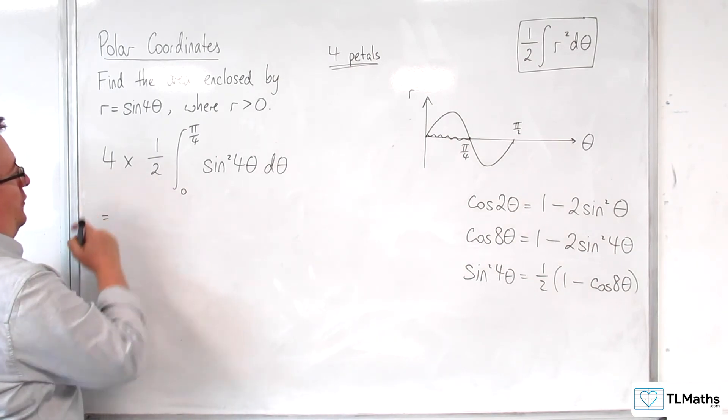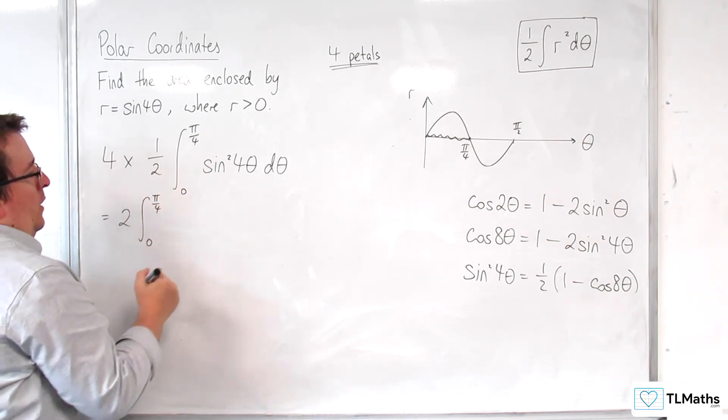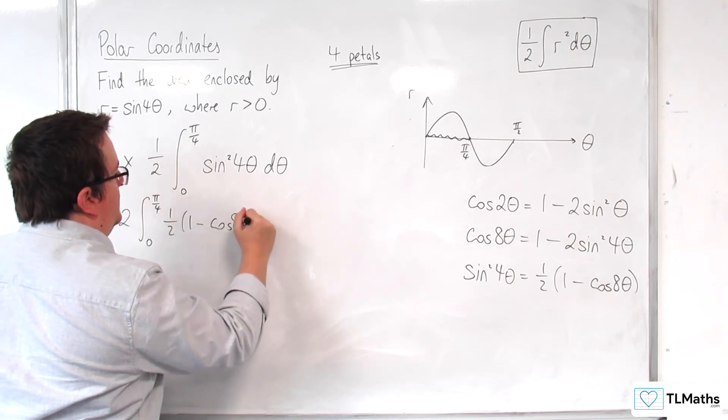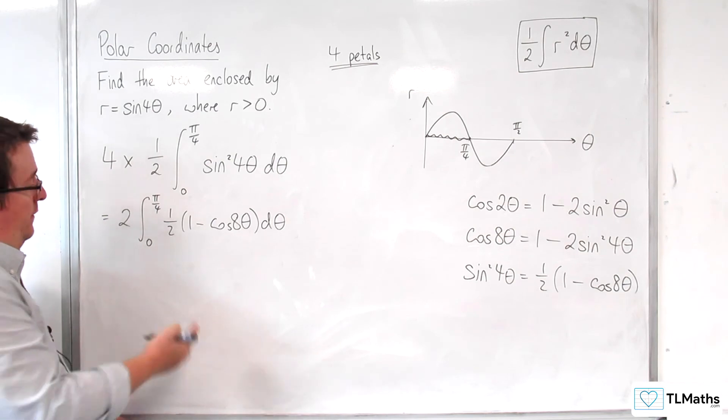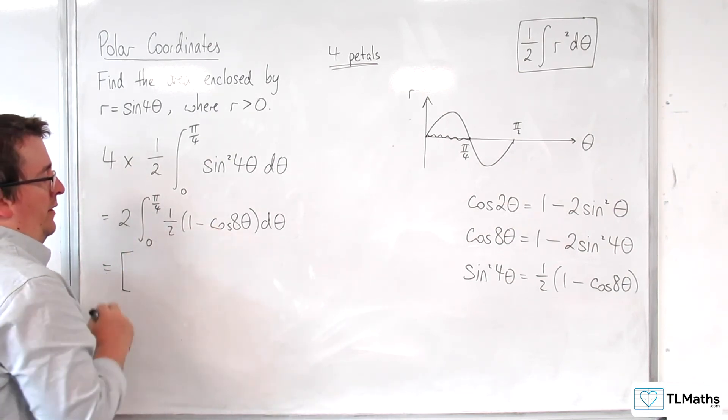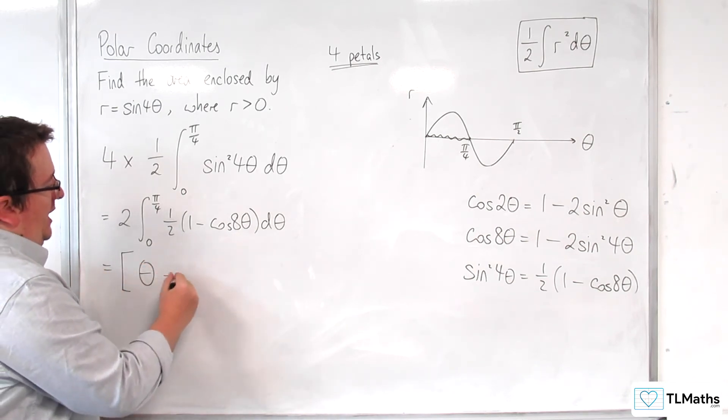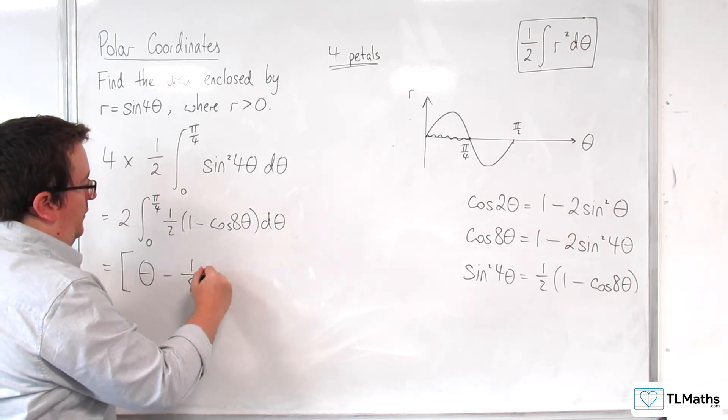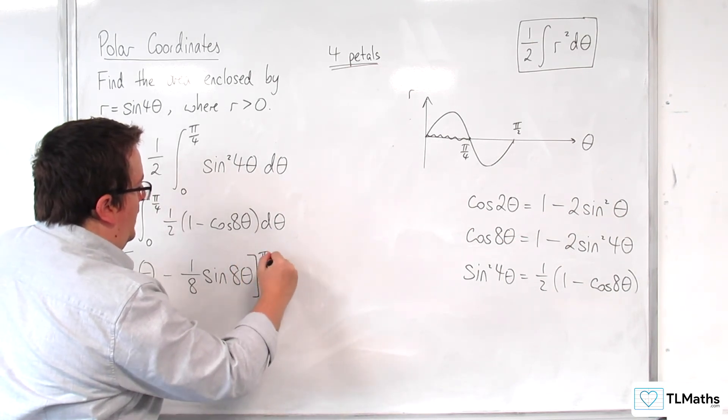So, we have 4 lots of 1 half, so 2 lots of the integral between 0 and pi over 4 of 1 half 1 minus cosine 8 theta d theta. Now, I can bring the 1 half out, that will knock out the 2 that's there, and I'll just be integrating the 1 minus cosine 8 theta, which integrates to theta, and then take away, so cosine 8 theta integrates to 1 eighth sine 8 theta, evaluated between 0 and pi over 4.